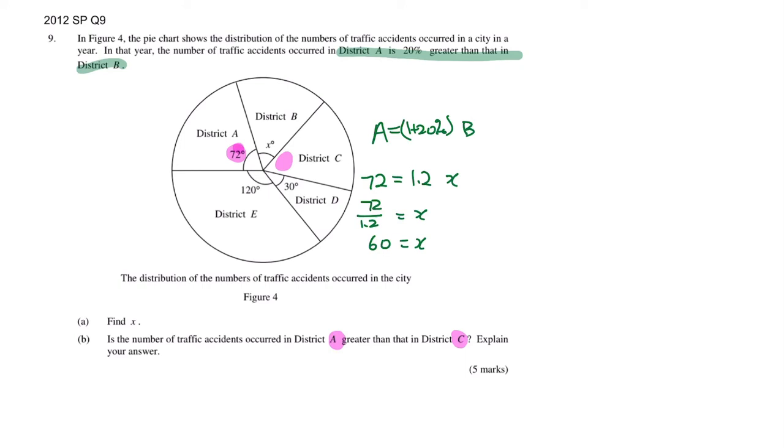The whole thing is a pie chart, right? In a pie chart, what's the total degree? It's a circle, so the circle degree will be 360. We know now that the whole thing is 360.